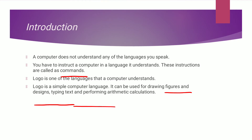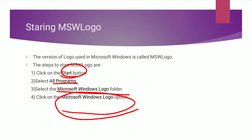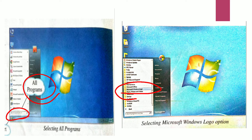We are going to see how to start MSW Logo. The version of Logo used in Microsoft Windows is called MSW Logo. The steps to start MSW Logo are: click on Start, go to All Programs, select Microsoft Windows Logo, and then click on the Microsoft Windows Logo option. After that you will be able to see the MSW Logo screen.